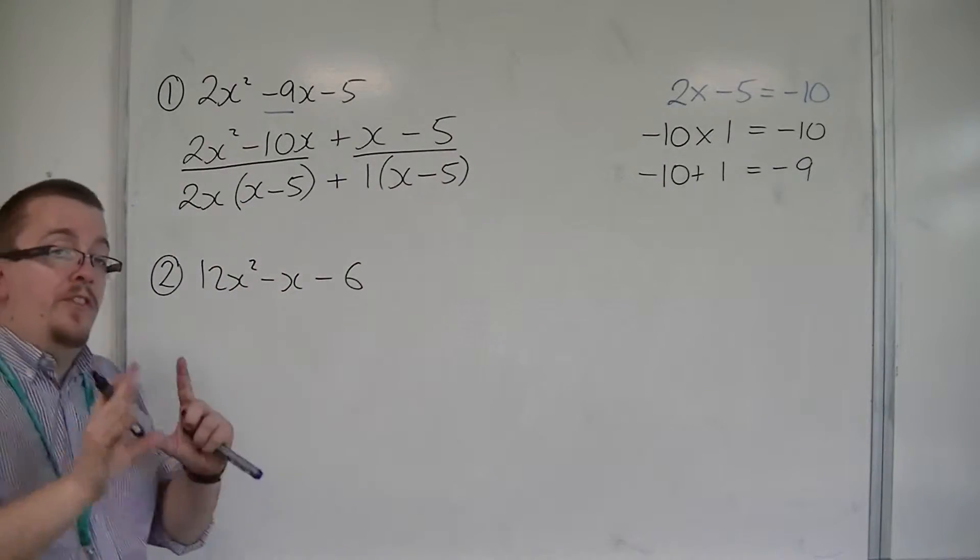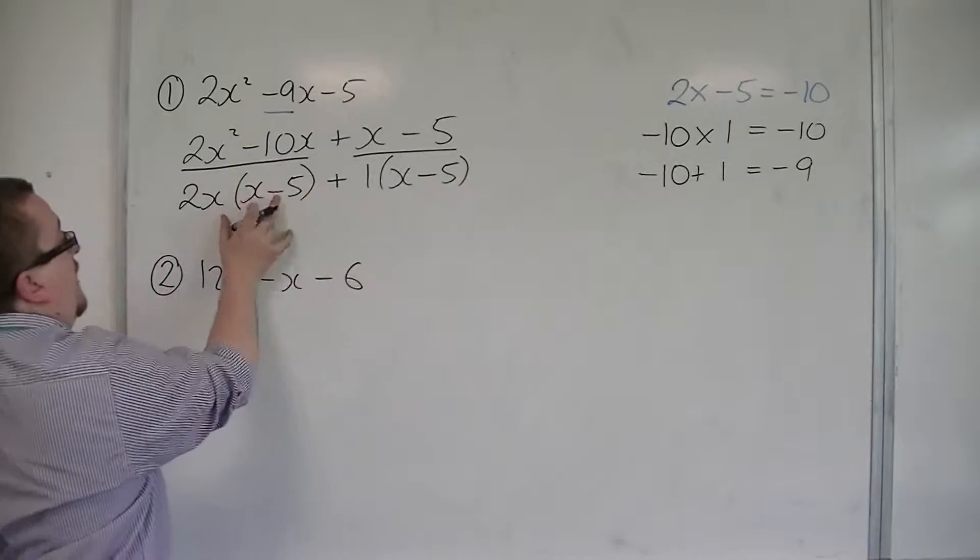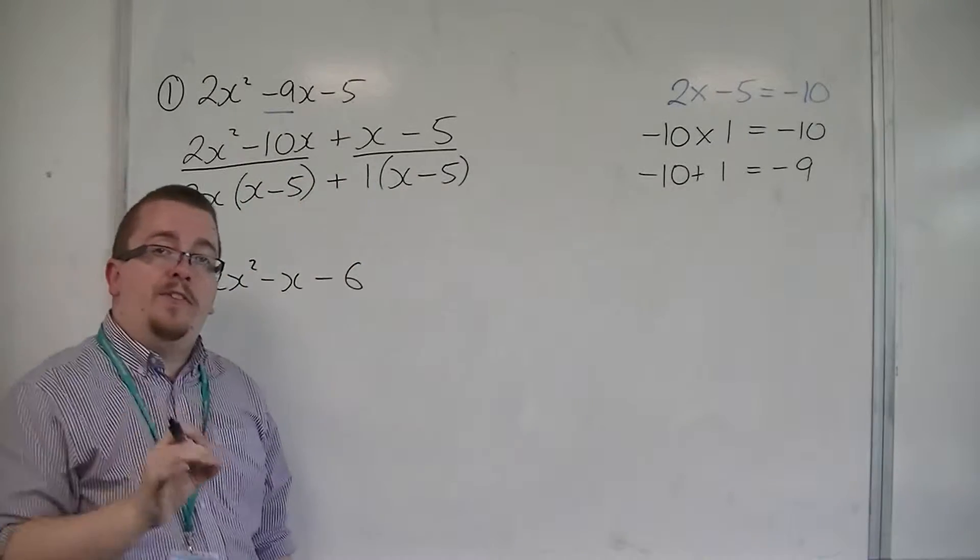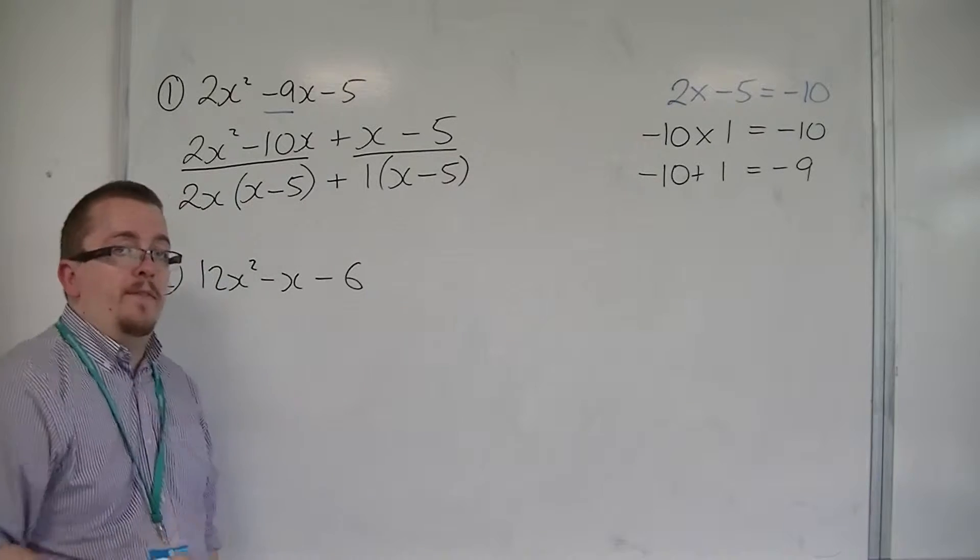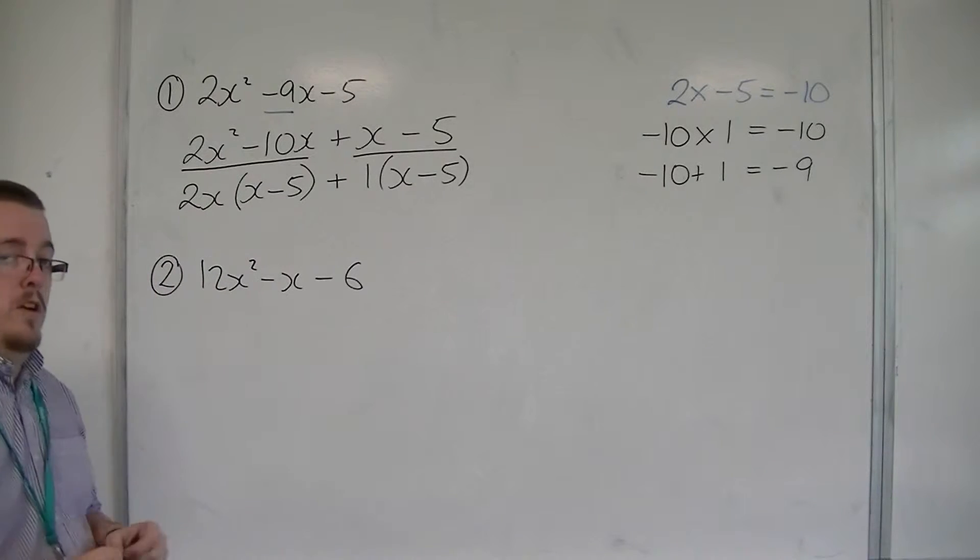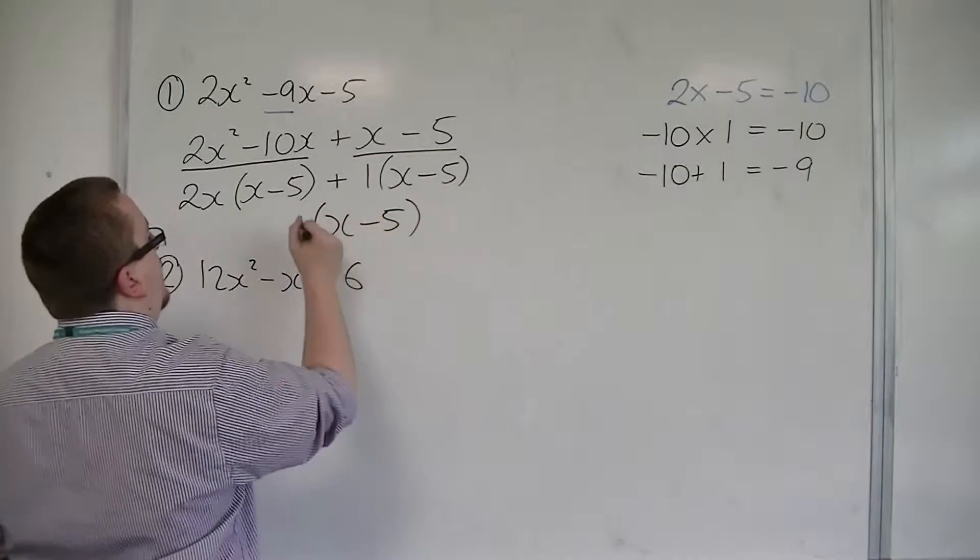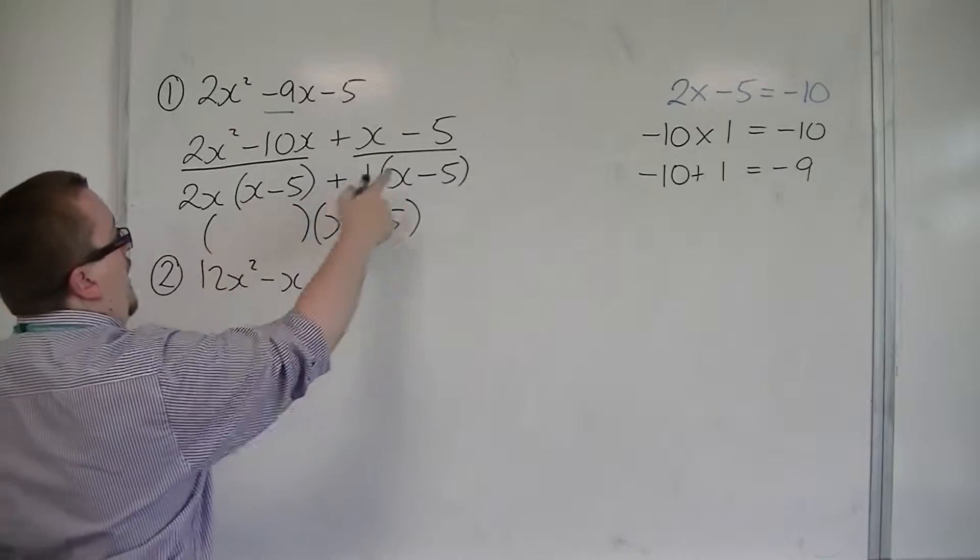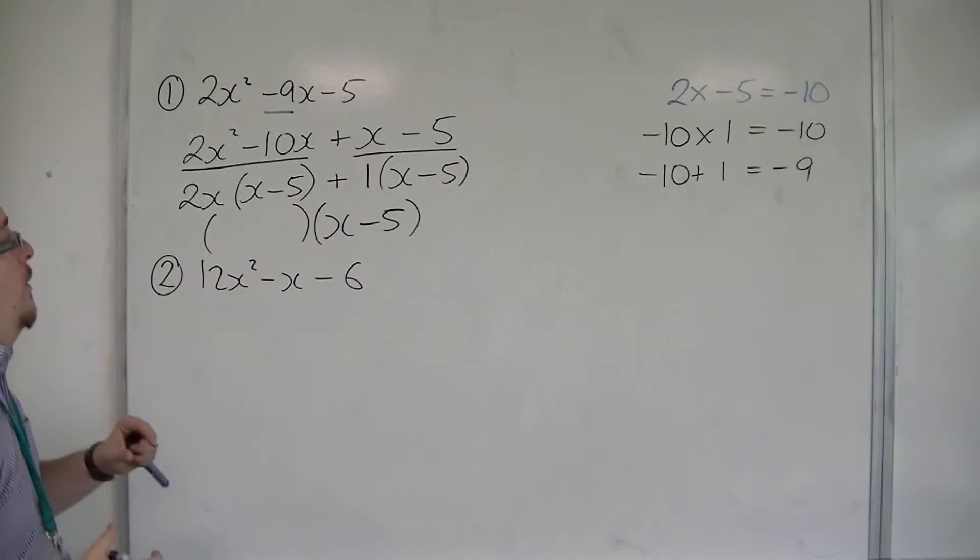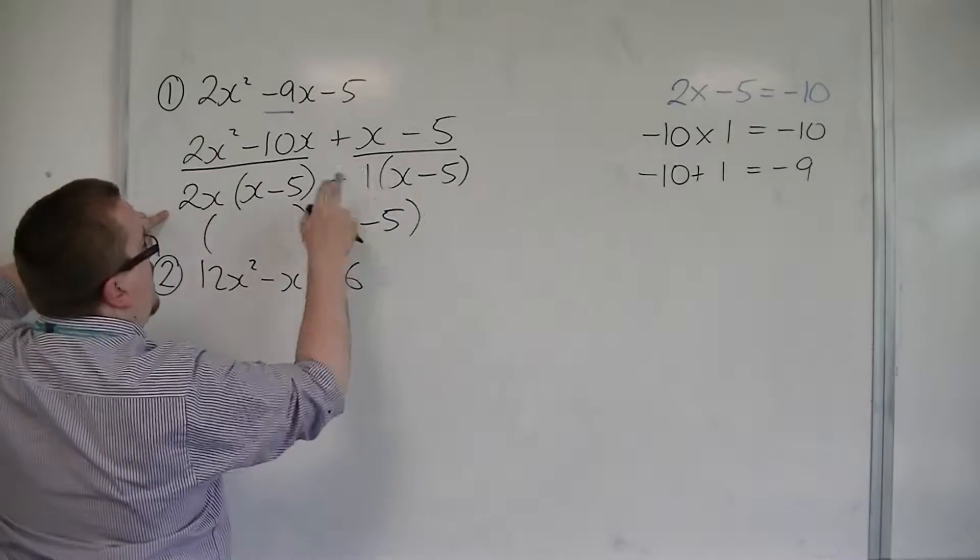And so what you can see is that both halves should have exactly the same bracket. If you don't have the same bracket, then you've gone wrong. So one of the brackets in the final answer is x minus 5. As shown.